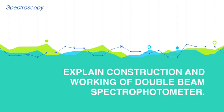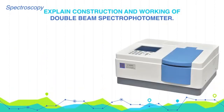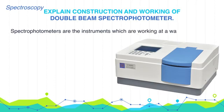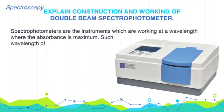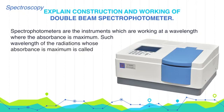Explain construction and working of double beam spectrophotometer. Spectrophotometers are instruments which work at a wavelength where the absorbance is maximum. Such wavelength of the radiations whose absorbance is maximum is called lambda max.